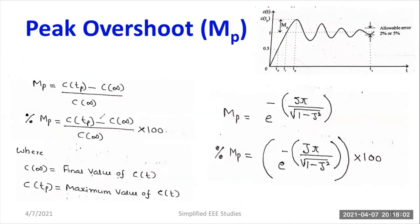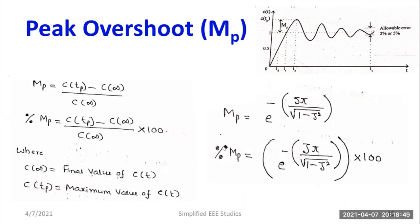After substituting tp and C(∞), you get the consolidated formula for peak overshoot: Mp = e^(−zeta × pi / sqrt(1 − zeta²)). To express peak overshoot in percentage: Mp% = e^(−zeta × pi / sqrt(1 − zeta²)) × 100. In an upcoming session, I will derive the expressions for peak overshoot, rise time, and peak time. Do remember these two formulas — during system design, they will really help you.